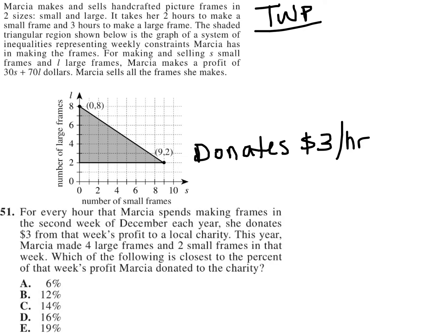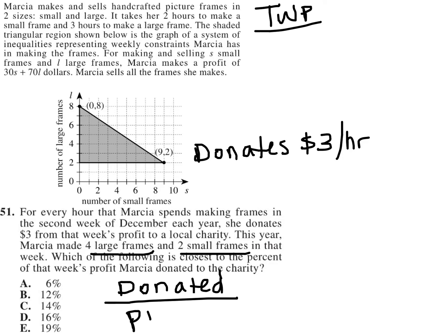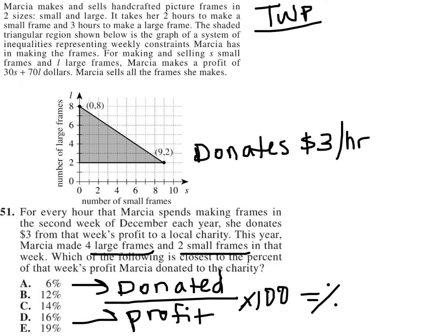Let's read the next sentence. This year, Marcia made four large frames — I'll underline that, that's important — and two small frames in that week. Which of the following is closest to the percent of that week's profit Marcia donated to charity? Since I'm trying to figure out the percent of the week's profit that was donated, the fraction I'm going to use is: the part donated divided by the whole profit made that week, multiplied by 100. So we need to figure out the amount donated and the total profit.